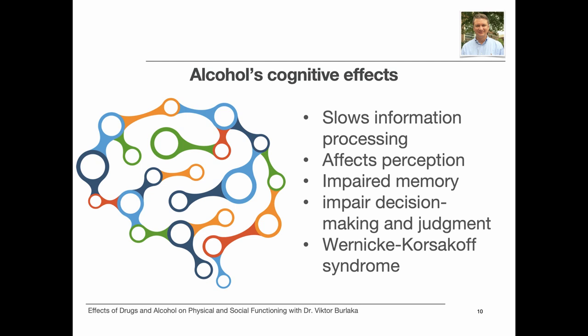The syndrome consists of two separate conditions. Wernicke's encephalopathy is a short and severe condition. It includes mental confusion, paralysis of the nerves that move the eyes, and difficulty with muscle coordination. For example, patients with Wernicke's encephalopathy may be too confused to find their way out of a room, or may not even be able to walk.